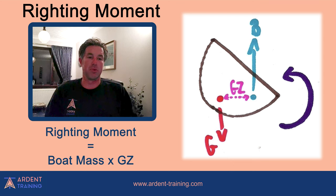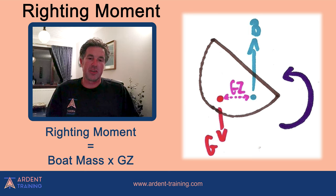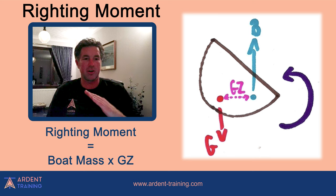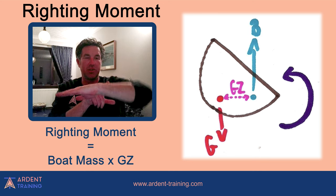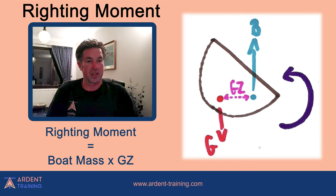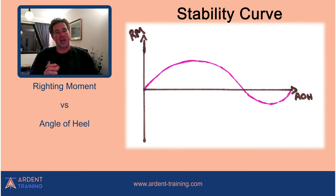The righting moment is a product of the distance between the center of gravity and where the buoyancy force acts, multiplied by the boat's mass — essentially a lever arm. Think of a seesaw from childhood: sitting at the end creates much more force than sitting near the center. The more a vessel leans, the more the point where buoyancy acts changes, and we can show this with a stability curve.